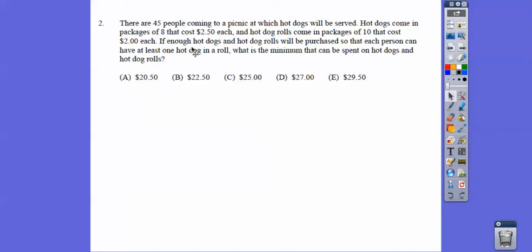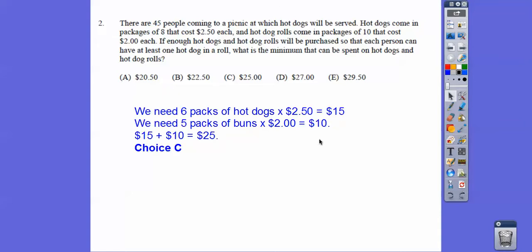And the hot dog rolls come in packages of 10, and they're $2 each. So we're going to need 5 packages of 10 to cover those 45 people. So if enough hot dogs and hot dog rolls will be purchased so that each person can have at least one hot dog in a roll, what's the minimum that can be spent? So it's going to be 6 packages times $2.50 is $15, and 5 times $2 is $10. So the minimum they're going to be able to get by with is $25, choice C.